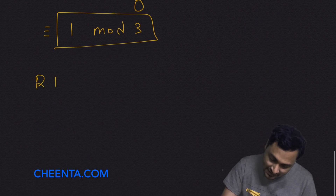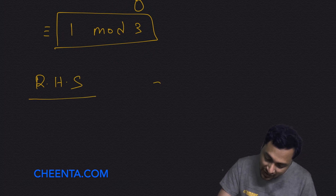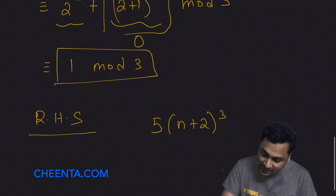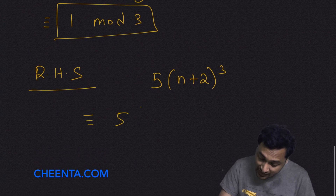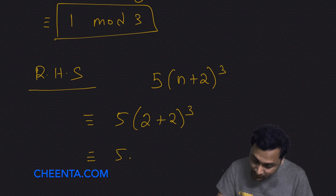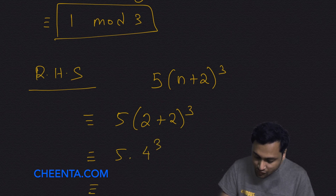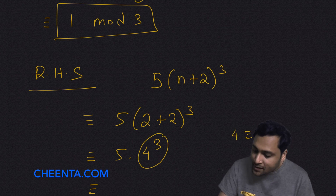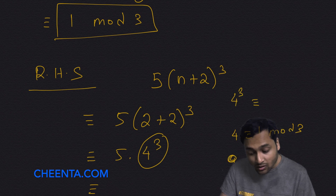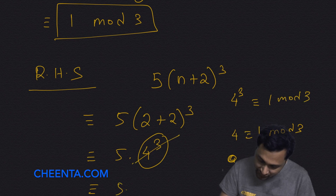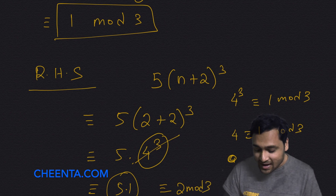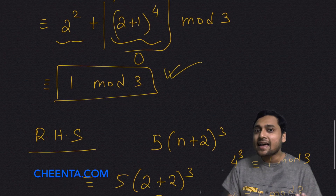And what happens to the right hand side? It's 5 times n plus 2, raised to 3, with n ≡ 2 mod 3. This becomes 5 times 2 plus 2, raised to 3, which is 5 times 4 cubed. Now 4 ≡ 1 mod 3, so 4 cubed ≡ 1 mod 3. Then 5 times 1, and 5 ≡ 2 mod 3. So the right hand side is 2 mod 3 and the left hand side is 1 mod 3. Again we get a contradiction.